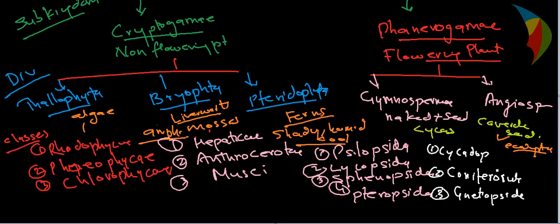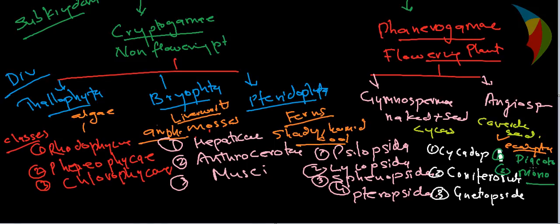So we have three classes in Gymnosperm and two classes in Angiosperm. In Angiosperm, the first class is Dicotyledon — having two cotyledons — and the second is Monocotyledon. So all angiosperms are covered into two classes: Dicot and Monocot.